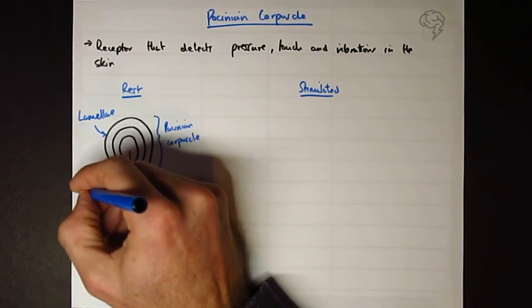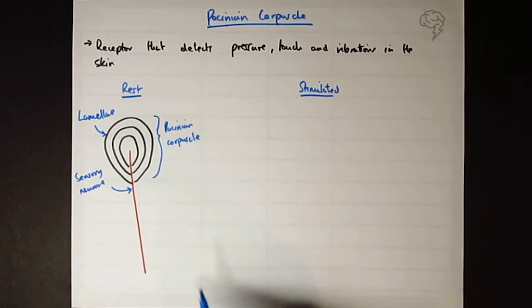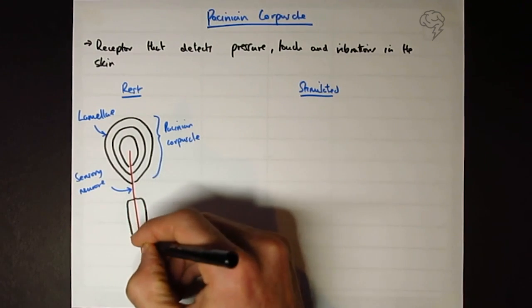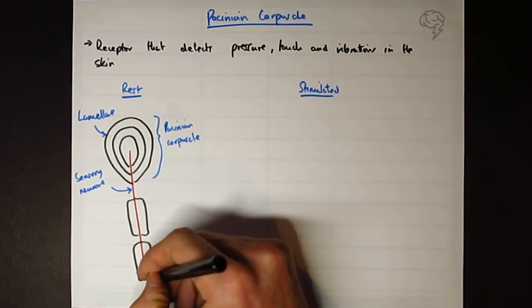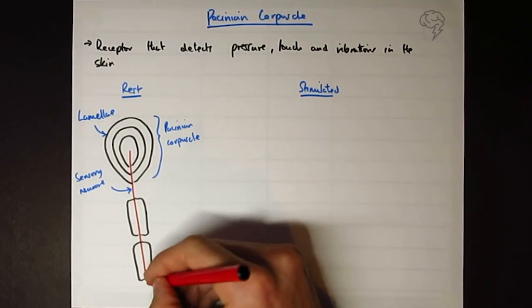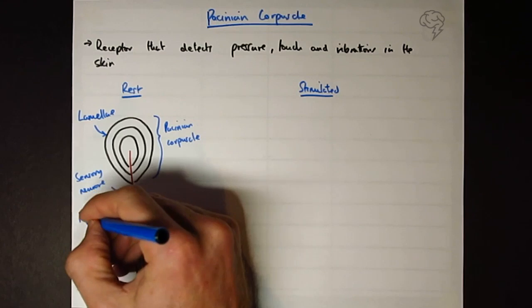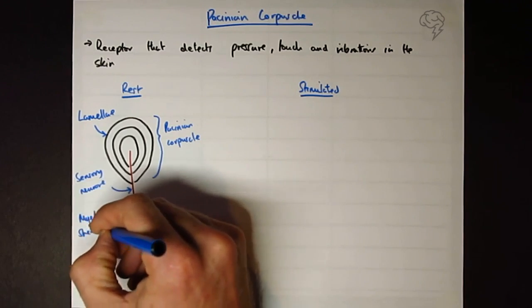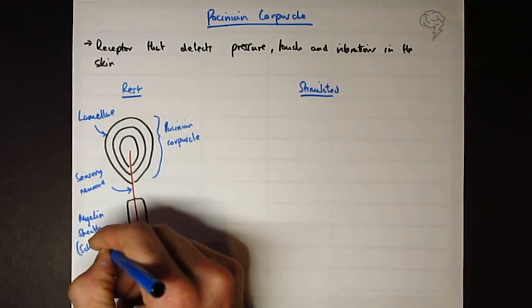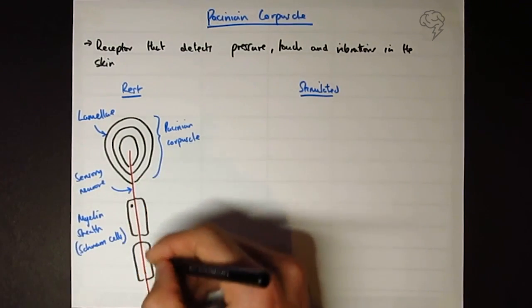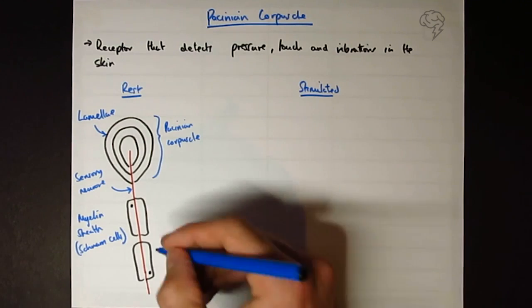This is our sensory neuron. Just as a little recap, I might throw in here some of the myelin sheath made of Schwann cells, and between them, we've got the nodes of Ranvier. And between them, you have the nodes of Ranvier.